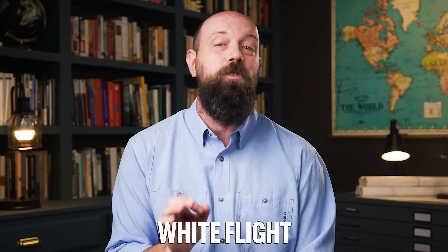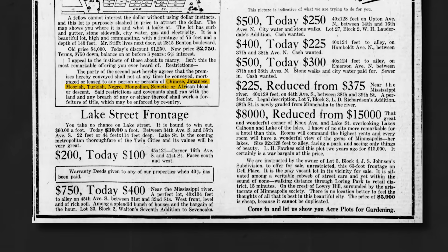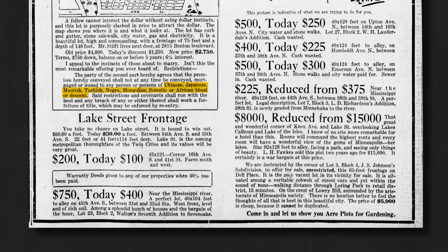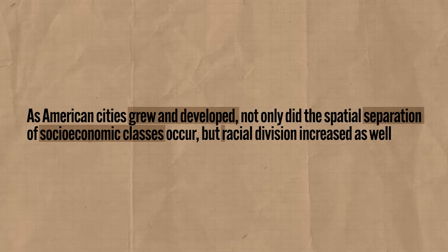That trend continued from the 1950s to the 1970s as white populations relocated in large numbers away from the city center and into the suburbs, a phenomenon known as white flight. In many cases, even if a Black family could afford to move into the suburbs, many white suburban settlements created covenants that effectively banned people of color from moving in. The result was that the population of urban centers skewed heavily towards non-white, impoverished, and aged people, while suburbs became increasingly white. So as American cities grew and developed, not only did spatial separation of socioeconomic classes occur, but racial division increased as well. This is a clear example of cultural factors — in this case racial segregation — playing a massive role in the spatial development of cities, and that pattern is still discernible today.